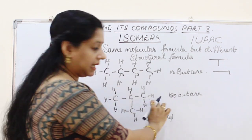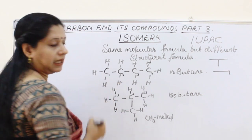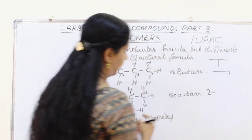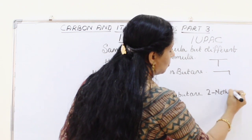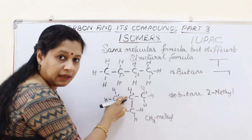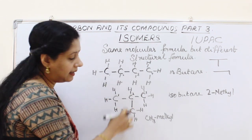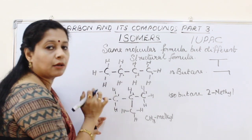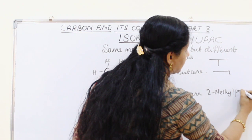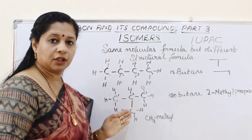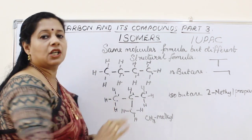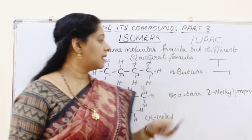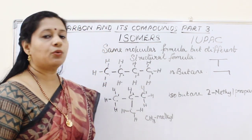IUPAC stands for International Union of Pure and Applied Chemistry, and they approve the naming system, or nomenclature. In the IUPAC system, we take the main chain first — which has 3 carbons — and identify that the methyl group is added at the second carbon atom. So we write it as 2-methylpropane. Any other isomer is not possible here, so these are the 2 isomers of butane: normal butane and isobutane, or 2-methylpropane.